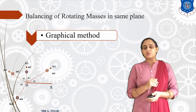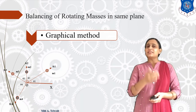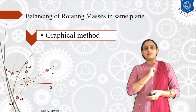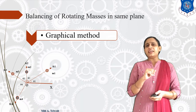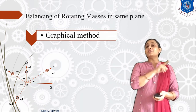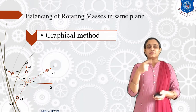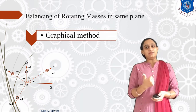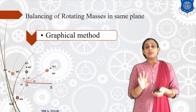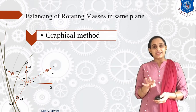Mass M3 is at theta 3 with respect to O-X, and similarly M4. In this case, I did not mention radius R, but assume all are having different radii: R1 for M1, R2 for M2, R3 for M3, and R4 for M4. So it is having four different masses, four different radii, and four different angles.